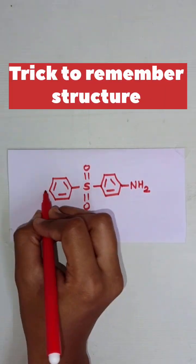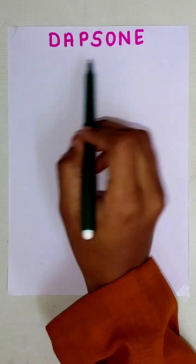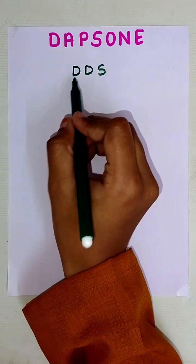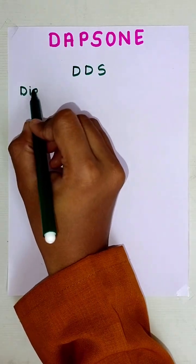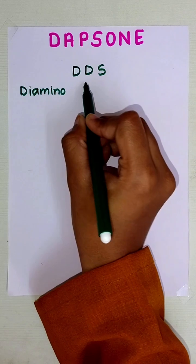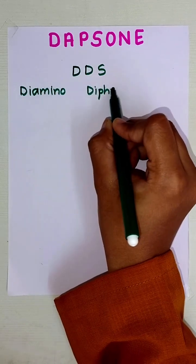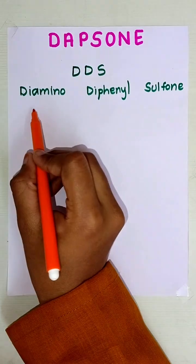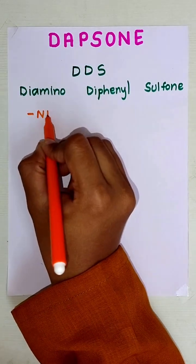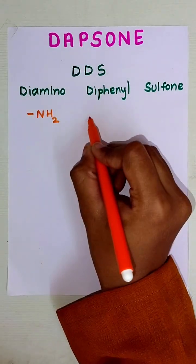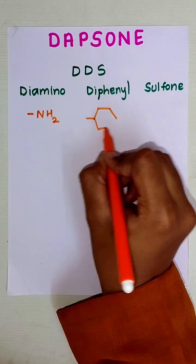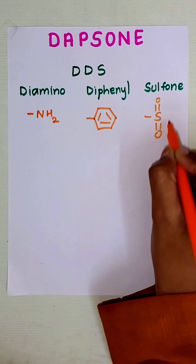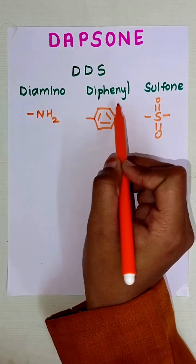I'll show you a trick to remember dapsone structure. Let's give it a pet name DDS. In this, D stands for diamino, this D stands for diphenyl, and S stands for sulfone. Amino group is the NH2 group, phenyl is phenyl ring C6H5, and sulfone is S double bond O.